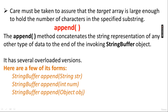The append method concatenates the string representation to the StringBuffer object. StringBuffer.append() is overloaded — you can pass a string, a number, or an object. It will concatenate the string representation of any other type of data at the end of the invoking StringBuffer object. If you specify a string, the string will be appended; a number, the number will be appended; an object, the object representation will be appended.